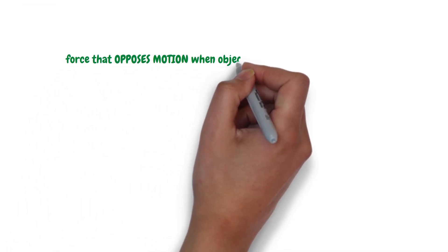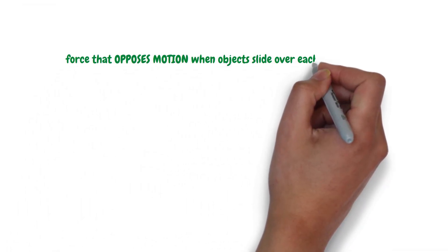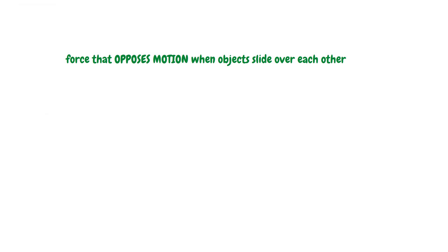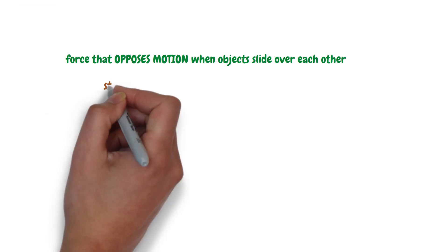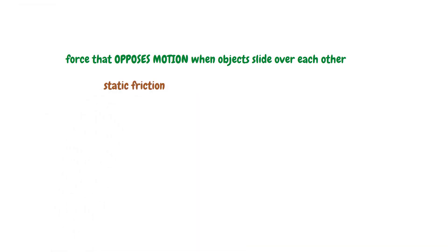To recap, friction is the force that opposes motion when objects slide over each other. There are four types of friction. Static friction is the force that resists the initiation of sliding motion between two surfaces. Kinetic friction is the force that opposes the relative motion between surfaces in contact when they are already sliding.